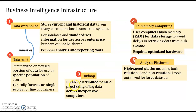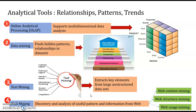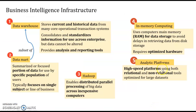The third infrastructure is Hadoop, which enables distributed parallel processing of big data across inexpensive computers. Fourth is in-memory computing, which uses RAM and requires optimized hardware. Fifth is the analytic platform — a high-speed platform using both relational and non-relational tools optimized for large data sets.